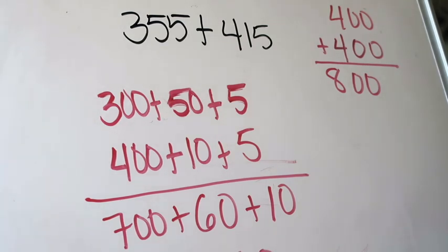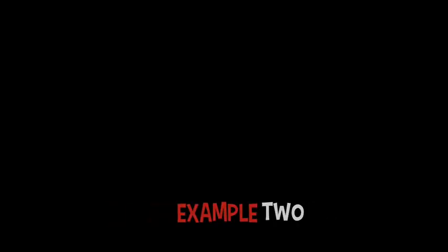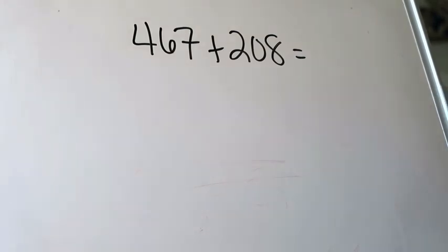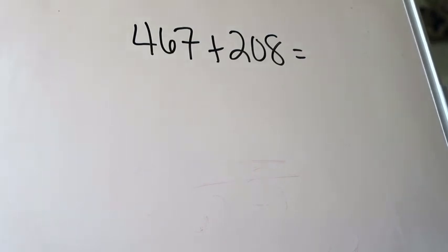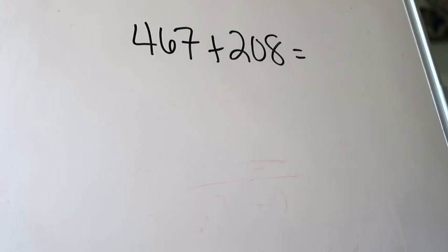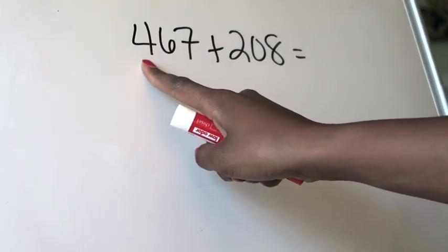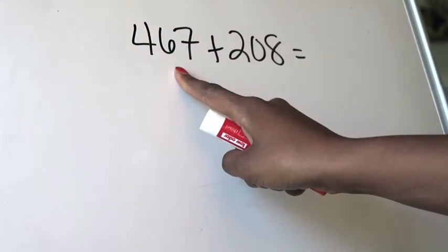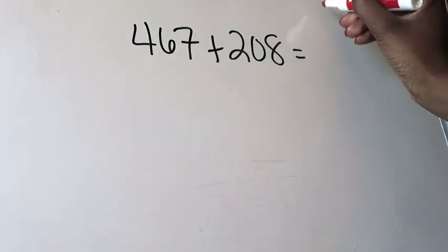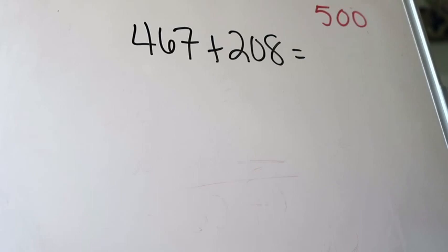We didn't do the final step of comparing our exact answer to our estimated answer. Our estimated answer was 800 and our final answer was 770 — and 770 is very close to 800, so I feel comfortable that we did that problem correctly. Now onto the next one: 467 plus 208. Rounding 467, the digit to the right of 4 is 6, so it rounds up to 500. For 208, the digit to the right of 2 is 0, so it rounds down to 200. My estimated answer is 700.